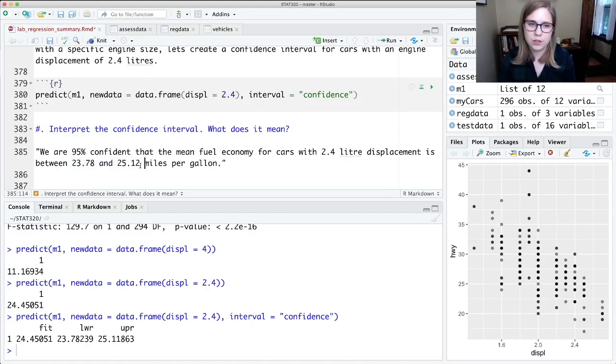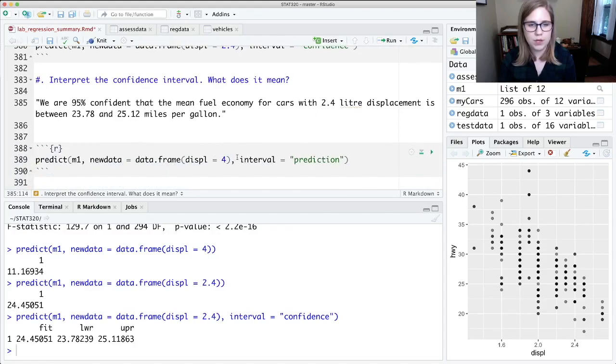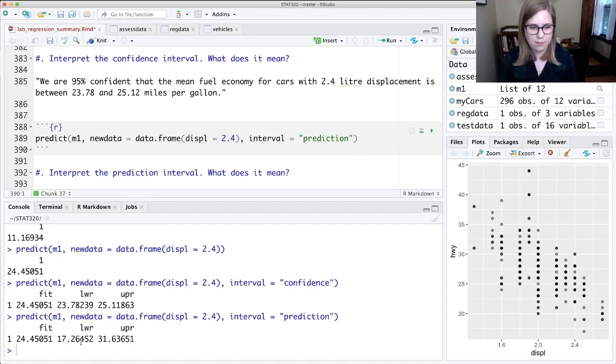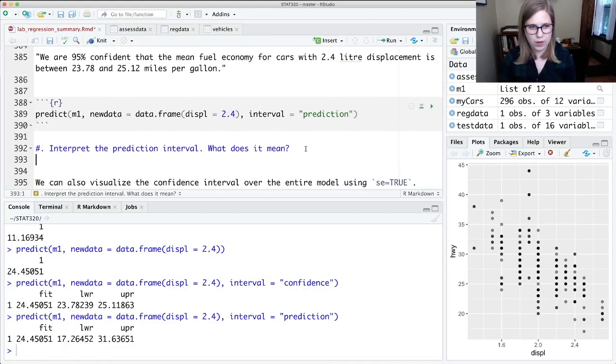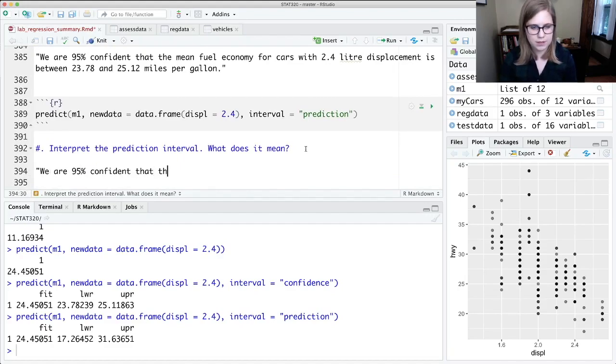But then we could do the same thing for a prediction interval. I'll put in 2.4. If I run this, now I have a much wider interval and the way I would interpret this is: we are 95% confident that the fuel economy for a particular car with a 2.4 liter engine displacement is between 17.26 and 31.64 miles per gallon.